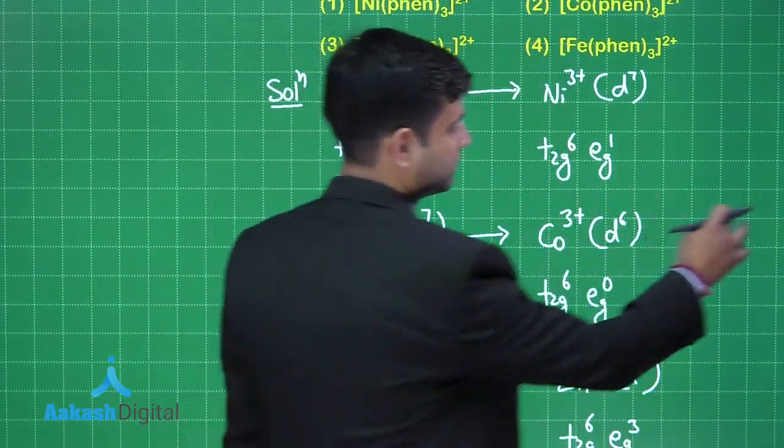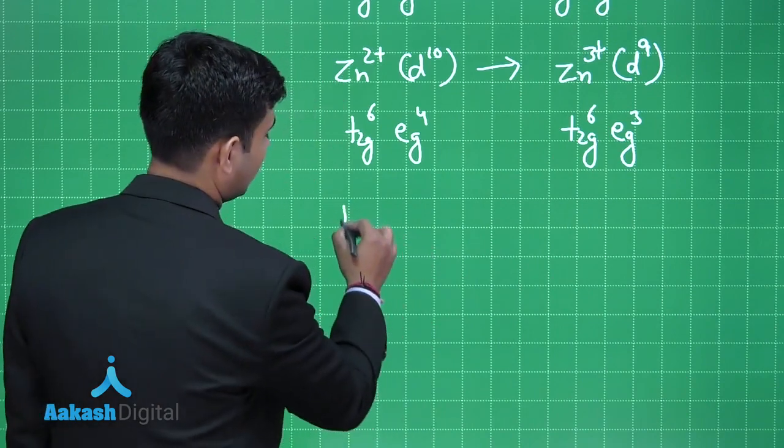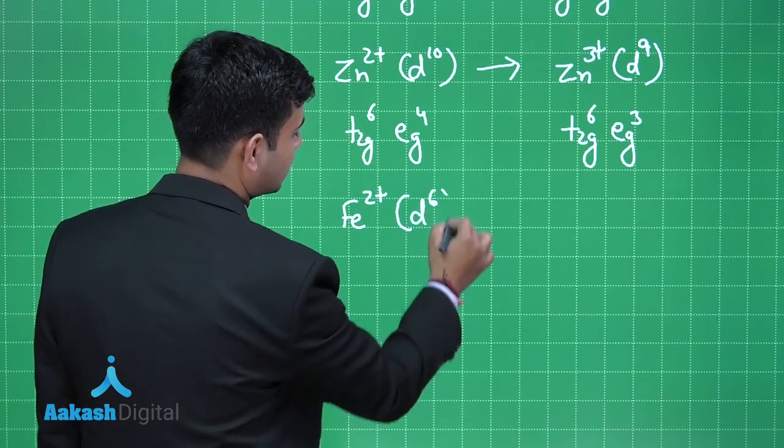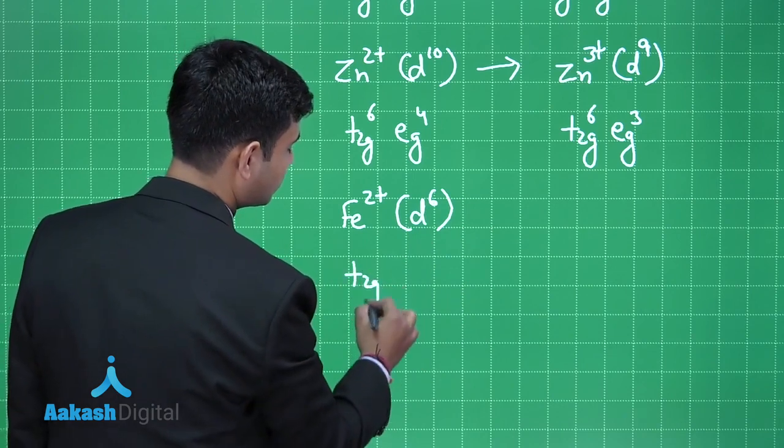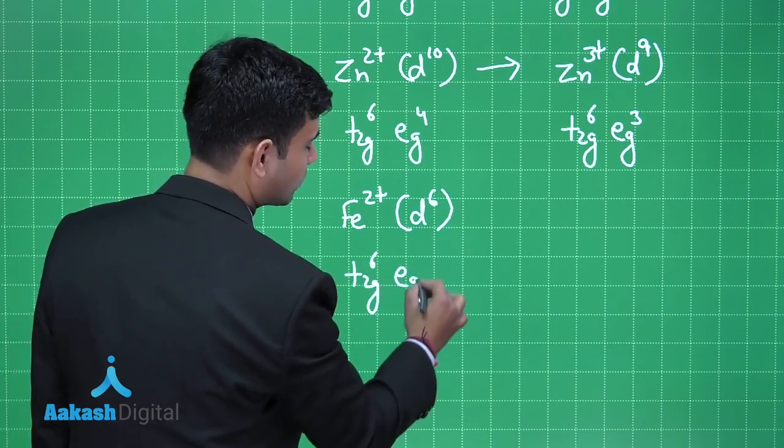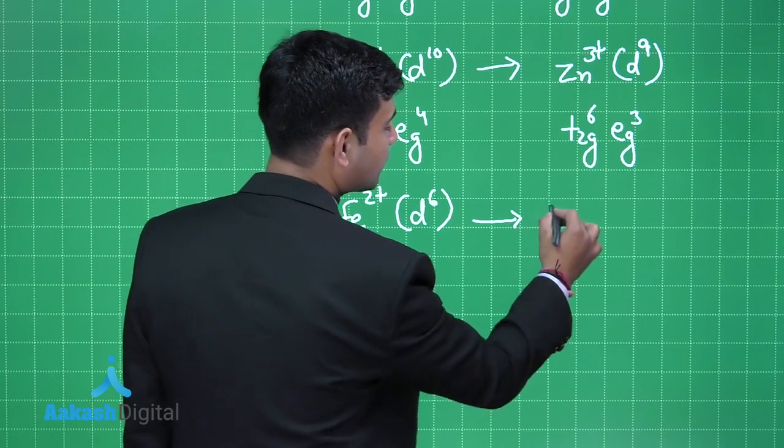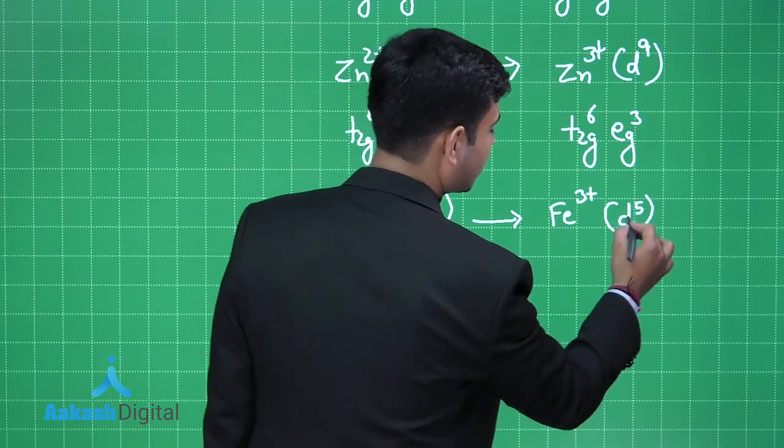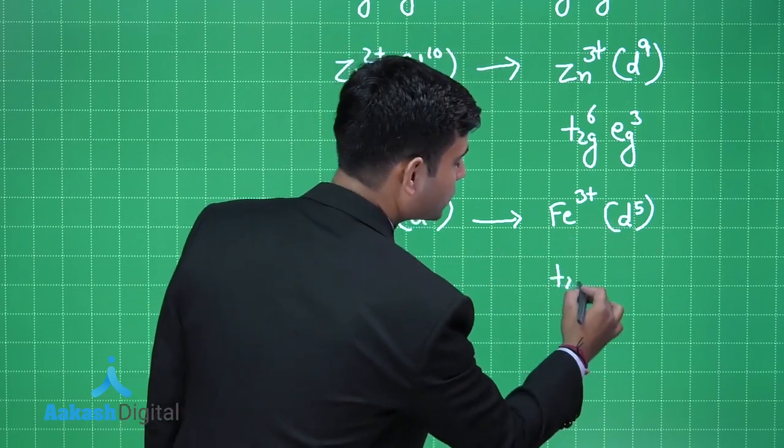Fe2+ has d6 configuration, so it is t2g6 and eg0. If it oxidizes to Fe3+ it will have d5 configuration, so it is t2g5.